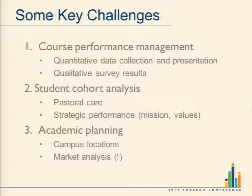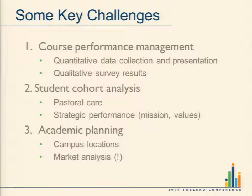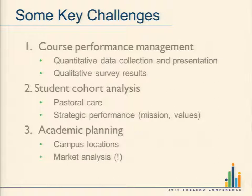We're also very interested in student cohort analysis. Because of where we're located, two thirds of our 40,000 students are first in family — their parents didn't go to university. And 25% of our student body is from a low socioeconomic status background. So we have to care about these cohorts and how they're tracking. That's really well embedded in our mission and values — caring about giving access to students who otherwise wouldn't have access to university education, which makes pricing quite interesting.